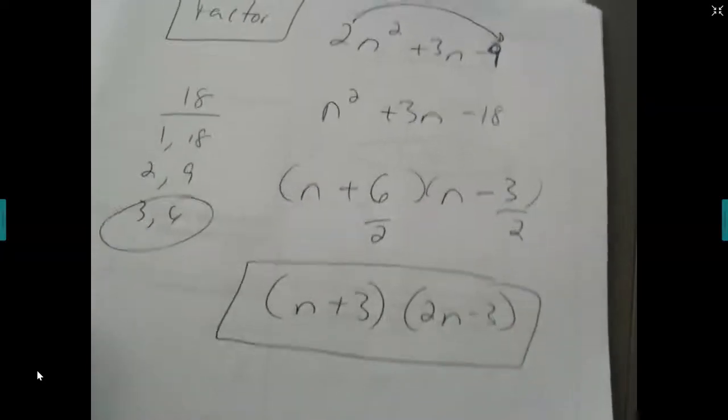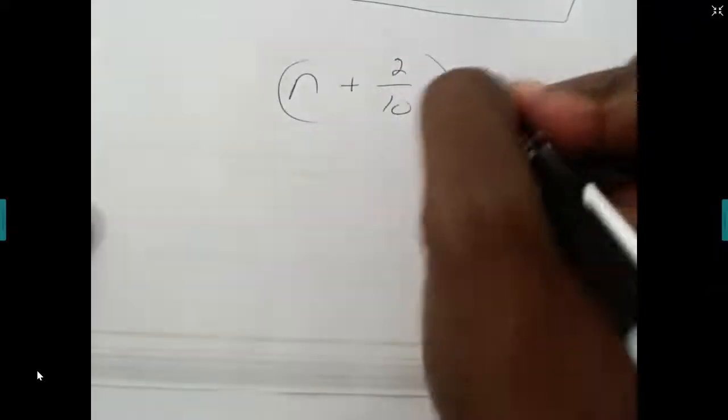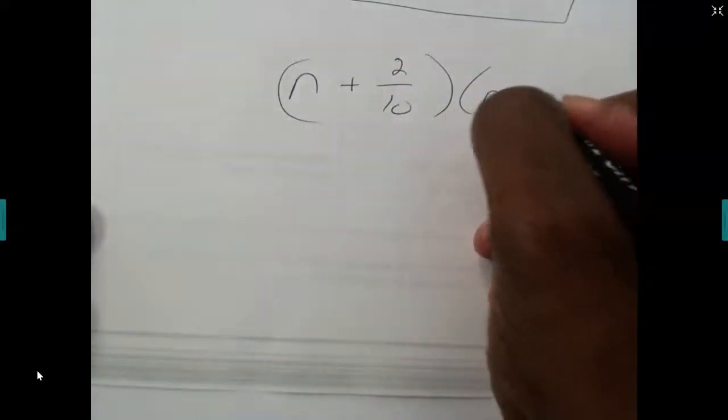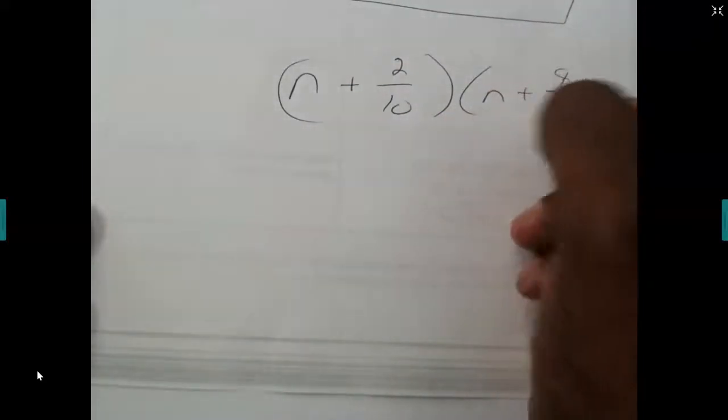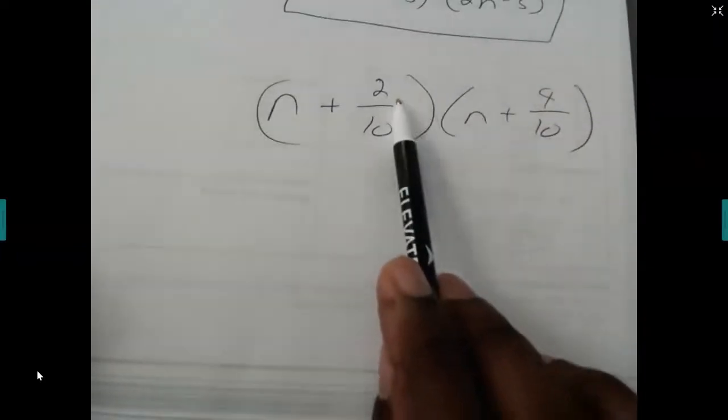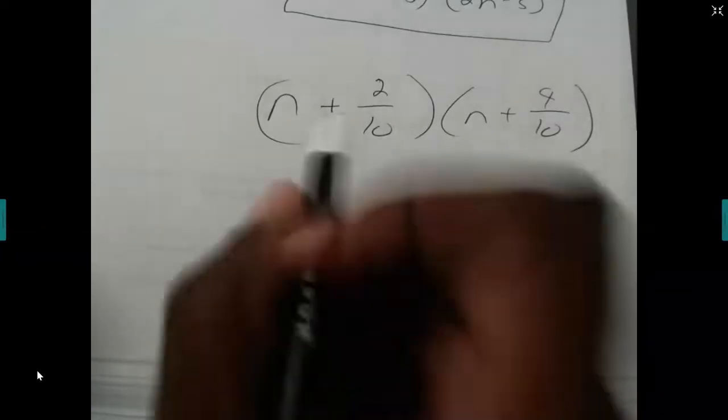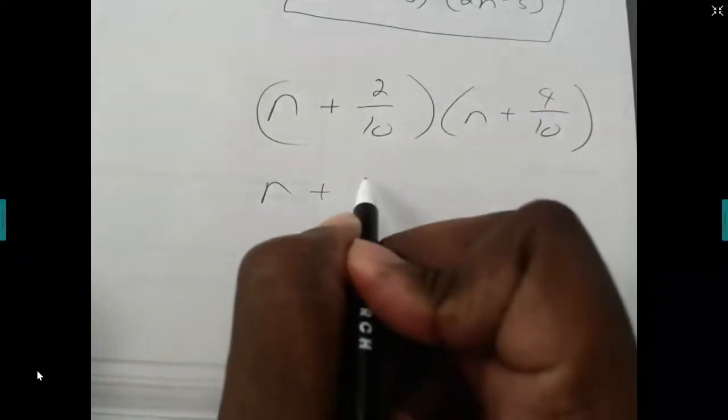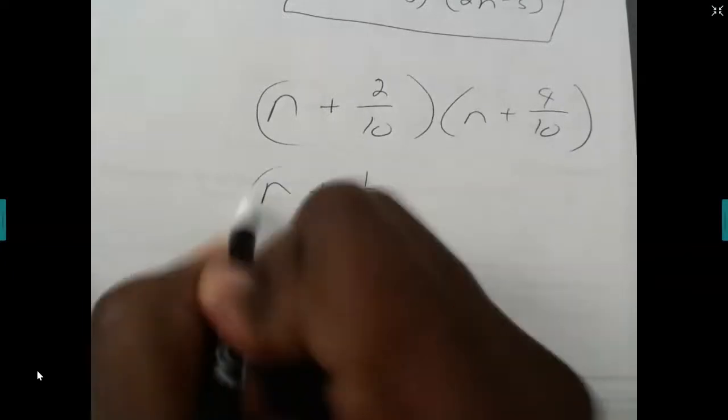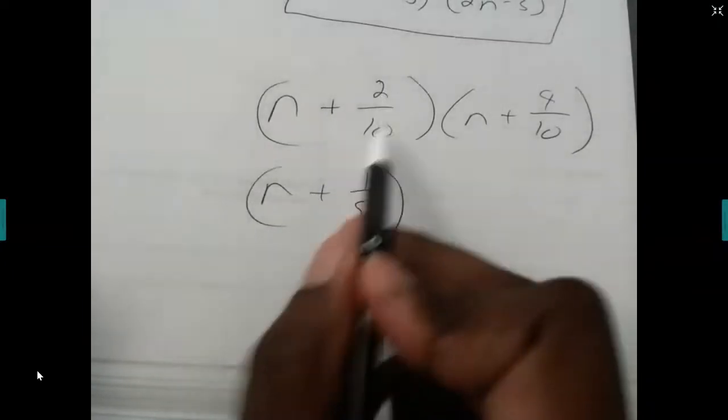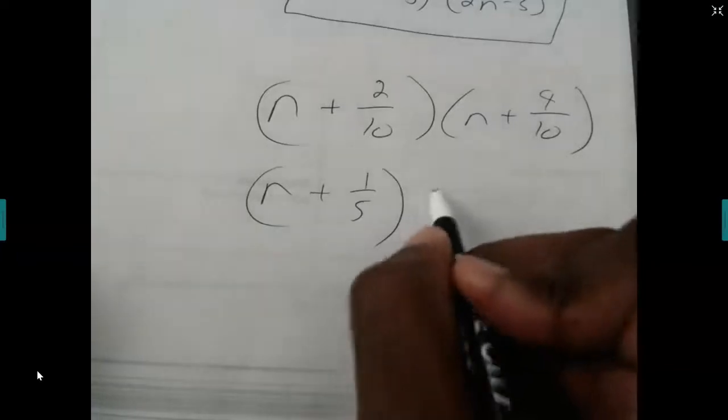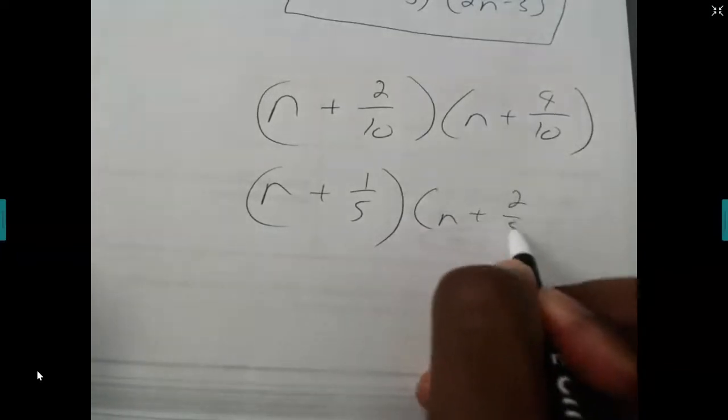Now I need to mention this too. Sometimes you're going to factor a polynomial and you're going to come up with things like this. And it's going to be like 2 over 10, and then you may have something like n plus 4 over 10. In these cases, they do reduce. You have to reduce them first. So I'm going to call this n and then 1 over 5. That's what it reduces to be. These are both divisible by 2. 4 over 10 reduces to be n plus 2 over 5.